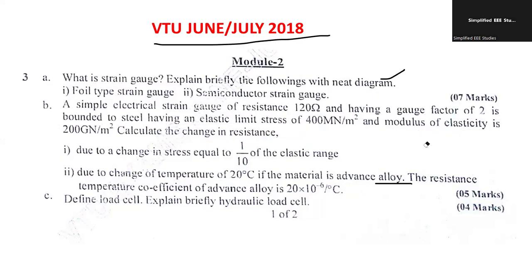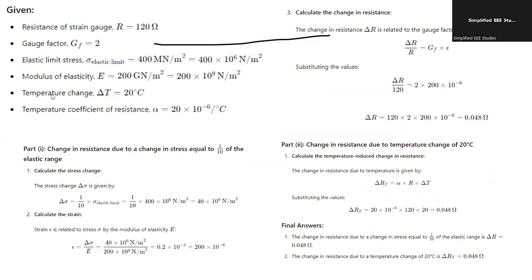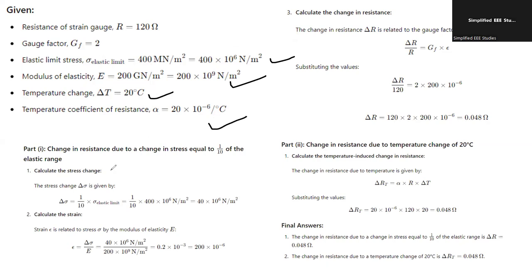Given the data, apply the relation for gauge factor. Note all parameters: gauge factor, resistance value, elastic stress converted to SI units (Mega Newton → multiply by 10⁶), modulus of elasticity (Giga Newton → multiply by 10⁹), temperature change delta T, and temperature coefficient of resistance alpha. Using the formula, delta sigma = 1/10 of the elastic limit gives 40 × 10⁶ N/m². Then calculate strain: delta sigma divided by E (modulus of elasticity).